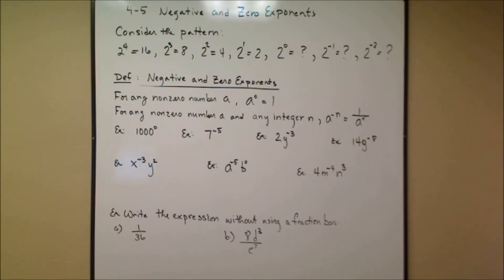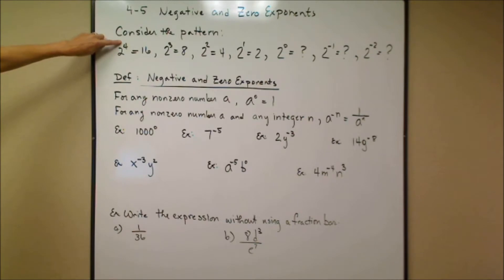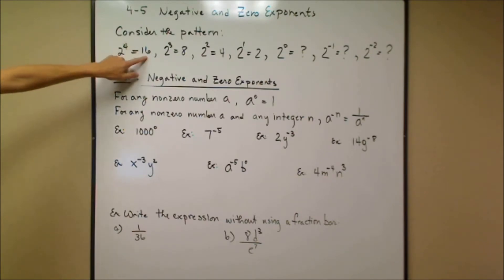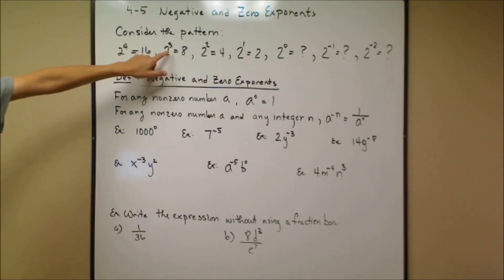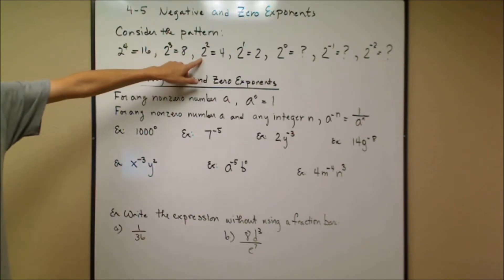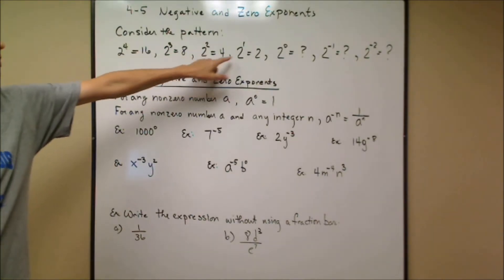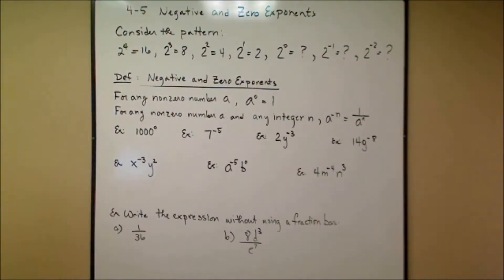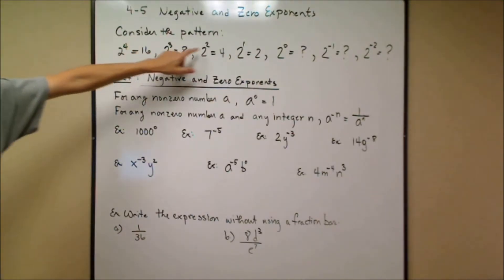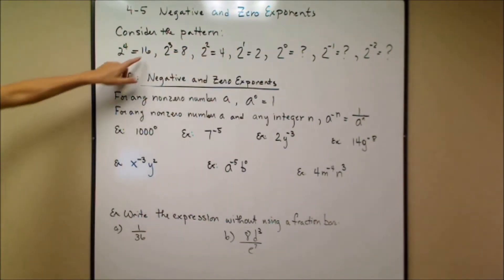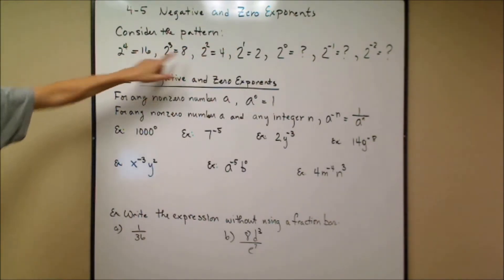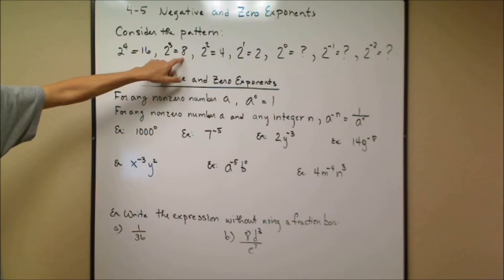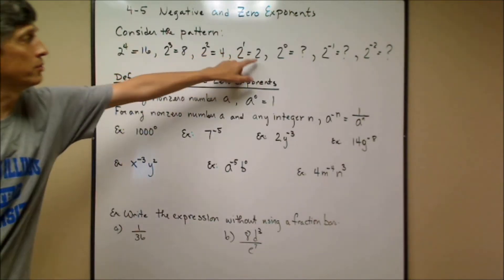First, let's consider this pattern. 2 to the 4th power is 2 × 2 × 2 × 2 = 16. 2 to the 3rd is 8. 2 to the 2nd is 4. 2 to the 1st is 2. You can see that I'm decreasing by 1 in my exponents and I'm dividing by 2 each time: 16 ÷ 2 = 8, 8 ÷ 2 = 4, 4 ÷ 2 = 2.